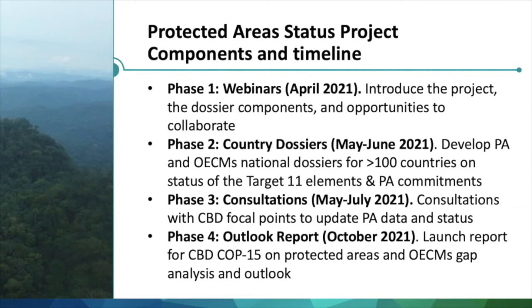For the first phase of the project, we are hosting three protected areas and OECM status webinars this week in order to introduce the project and dossiers to CBD focal points and to answer any questions about the support service. The second phase will be finalizing and providing countries with country data dossiers for IHE Target 11, done in batches and presented to countries in May and June. The third phase includes consultations with CBD focal points to update and validate the data in the dossiers. Following delivery of the country dossiers, parties are asked to verify and update their information on protected areas and OECMs as a nationally driven process. We will work with countries using a matrix to fill out on protected areas national status and can provide support via consultations as helpful.